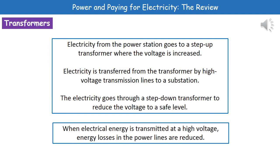When we looked at the national grid, we mentioned transformers. These are very important in changing the voltage. We have two types: a step-up transformer, which increases the voltage, and a step-down transformer, which reduces the voltage. If we transmit electricity at a high voltage, we actually reduce the energy losses in the power lines. So by having a step-up transformer outside the power station before electricity is transmitted, we reduce losses through the power lines. We then have to reduce the voltage at the other end before it gets into houses, because 400,000 volts would be dangerous and most appliances wouldn't work with it.